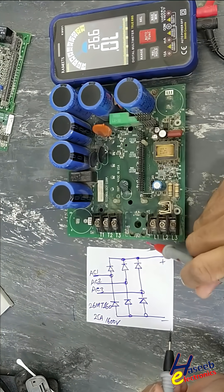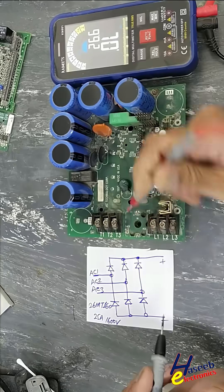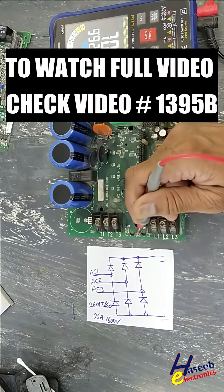Here are the AC1 terminal, AC2 terminal, and AC3 terminal. This is the positive output terminal and the negative output terminal.